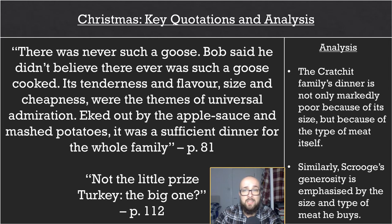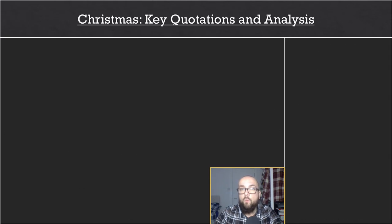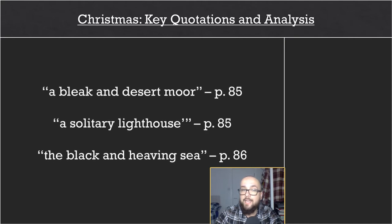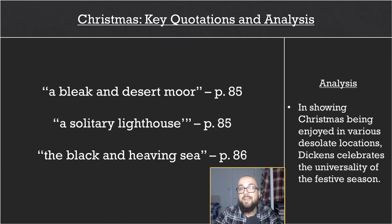Back to Stave 3 now. Scrooge and the Ghost of Christmas Present travel far and wide and see a number of people celebrating Christmas in various locations, such as 'a bleak and desert moor', 'a solitary lighthouse', and 'the black and heaving sea'. By showing Christmas being enjoyed in various desolate locations, Dickens celebrates the universality of the festive season. If it can bring joy and happiness to people living in these disparate and seemingly unpleasant locations — suggested by adjectives such as 'bleak', 'solitary' and 'heaving' — then Christmas must really be the most wonderful time of the year.